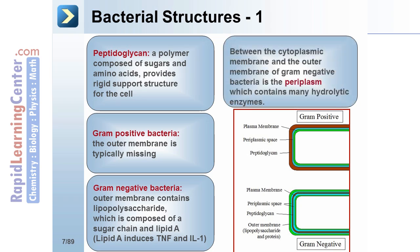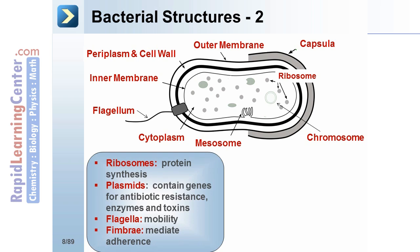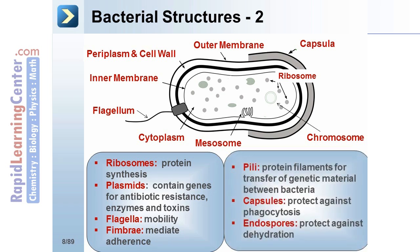Between the cytoplasmic membrane and the outer membrane of gram-negative bacteria is the periplasm, which contains many hydrolytic enzymes. Inside the cell are ribosomes used for protein synthesis, and plasmids that contain genes for antibiotic resistance, enzymes, and toxins.